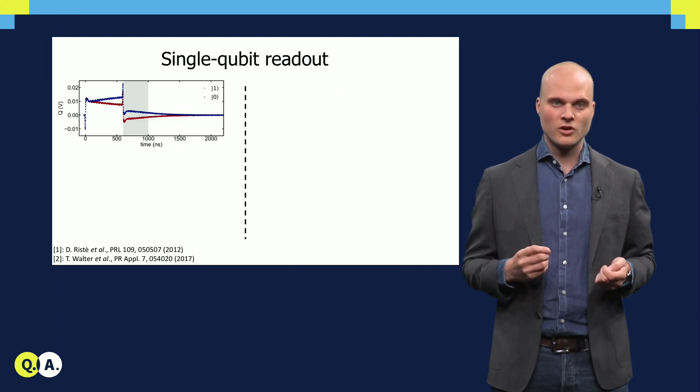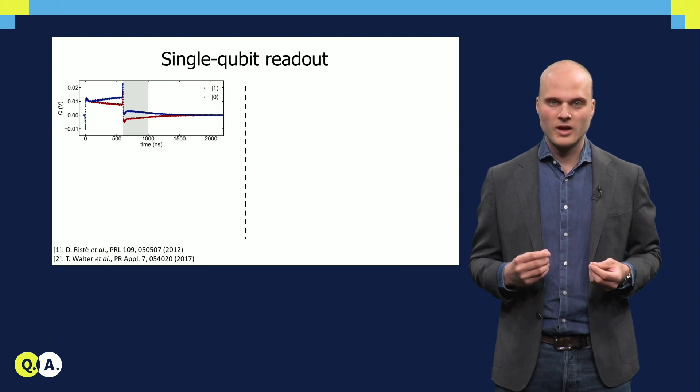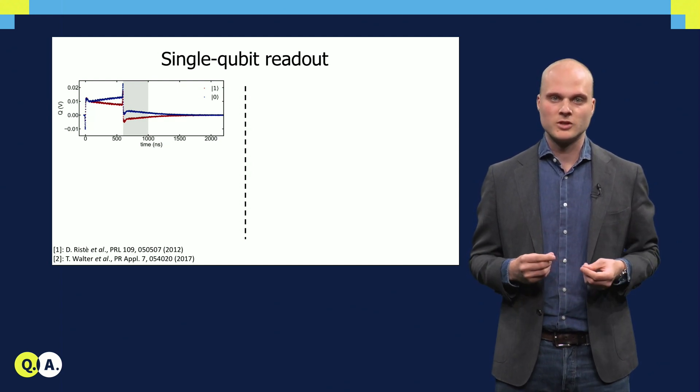The traces I have just shown you look very clean and distinguishable, as they are averaged over thousands of measurements. However, for most real quantum protocols, we are required to discern the qubit state in just a single run.